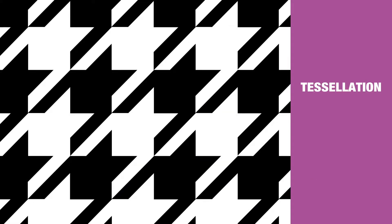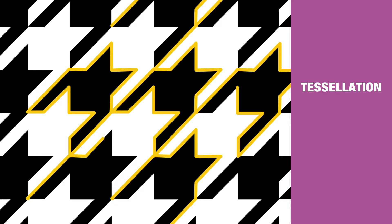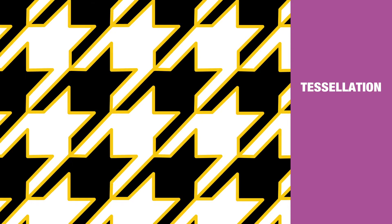This is known as a tessellation, which means the same repeated shape covers the surface without any gaps or overlaps. Tessellations can be described using mathematical principles and appear in the work of famous Dutch artist MC Escher. So you see, you can actually use math to create art.